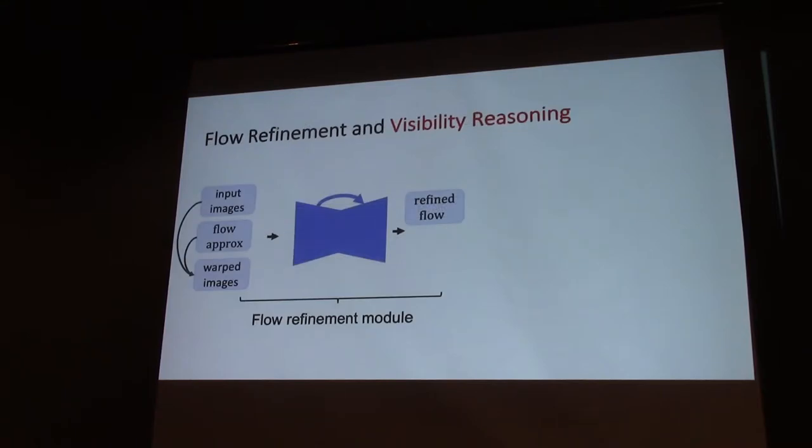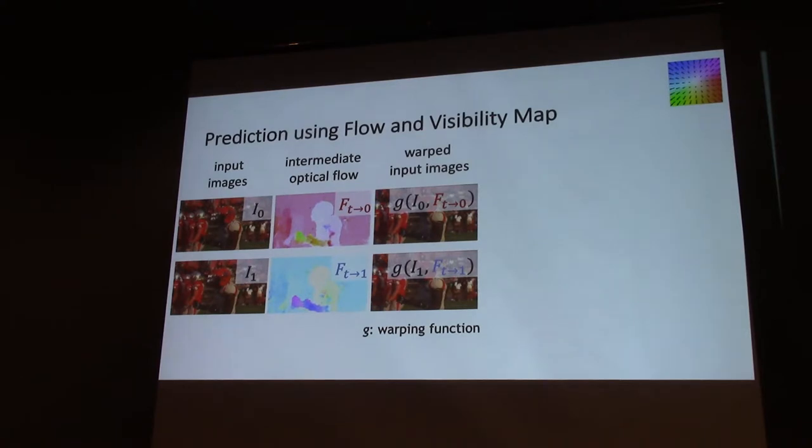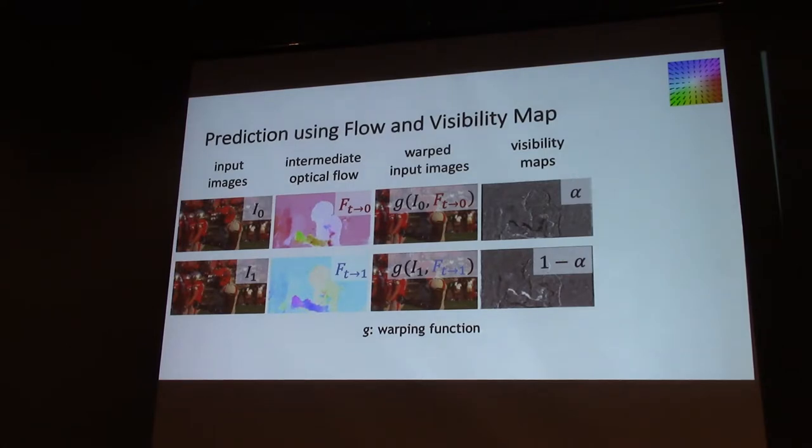Recall, in addition to finding correspondences in two input images, we also need to deal with occlusion or visibility reasoning. It turns out we can estimate pixel-wise visibility maps for input images as well, and then we can adaptively fuse input images to get a synthesized frame. Here's another illustration - we have input images, here are the intermediate optical flow and refined optical flow. We can warp input images using optical flow. Here are some visibility maps - each pixel value is between 0 and 1. 0 means fully occluded, which is dark, and 1 means fully visible, which is bright.